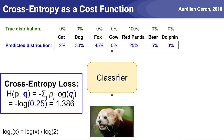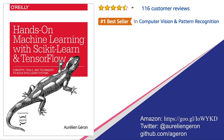So in this example, the cross-entropy is minus log of 0.25. You can see that the cost will grow very large if the predicted probability for the true class is close to zero, but if the predicted probability is close to one, then the cost will be close to the true distribution's entropy, which in this case is equal to zero since it's a one-hot vector. And that's it for this short presentation of entropy, cross-entropy, and KL divergence. I hope you found it interesting.